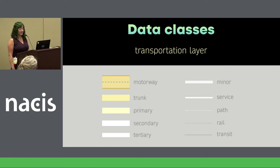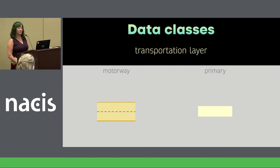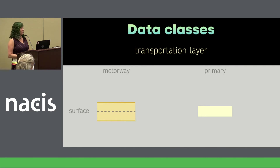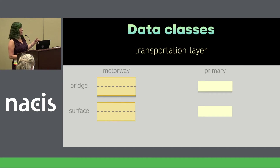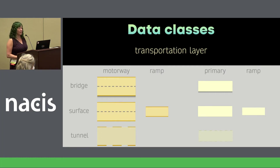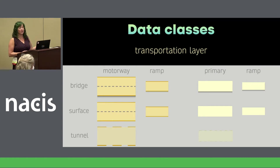Within the transportation data layer, there are 10 classes of road line, but it's a little more complicated than that. Consider two road classes: motorway and primary road. Here's how they look when they're surface streets. Bridges need to be displayed on top of those with shadows, and tunnels underneath in a way that makes it clear they're underground. Each road class can also be designated a ramp, which needs to be visually related but narrower. And ramps can be bridges or tunnels. So this kind of variation happens for almost all road classes, and you can see how layers quickly proliferate.